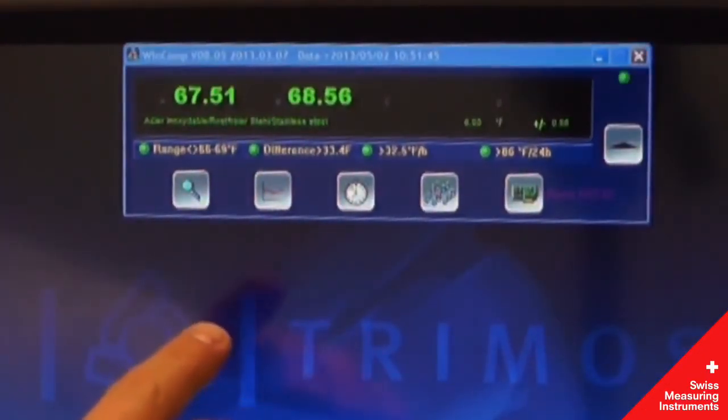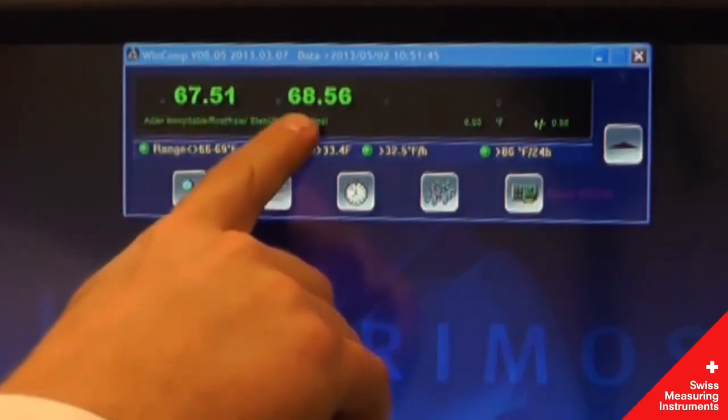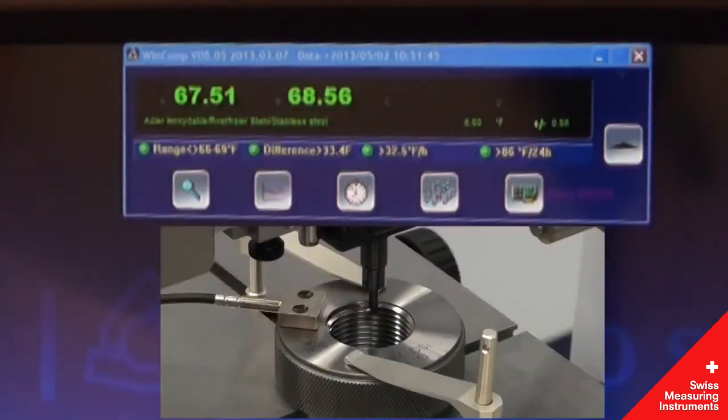On the right is WinComp, which monitors and compensates for fluctuations in temperature. Here it displays the temperature of the scale and the workpiece via a magnetic thermal probe.